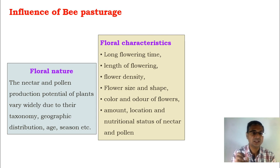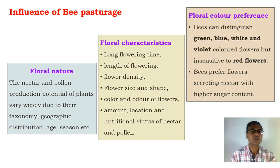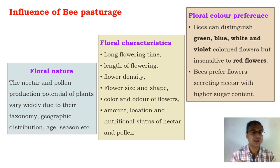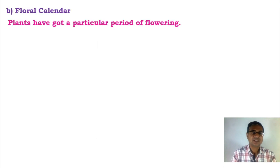Color and odor of the flower also influence bees to collect materials, as well as the amount and location of the nectar and the nutritional status of the pollen and nectar. Floral color preference is also important and attracts the number of bees for pollination. Bees can distinguish especially green, blue, white, and violet colors of flowers but are insensitive to red flowers, and they especially prefer those flowers where nectar is present and which has higher sugar content.